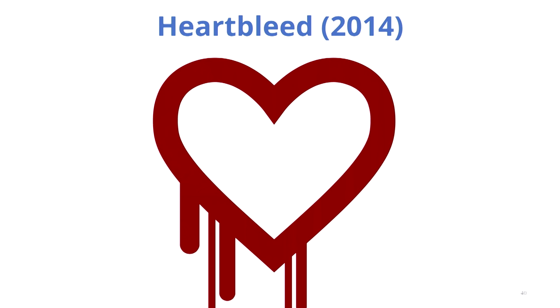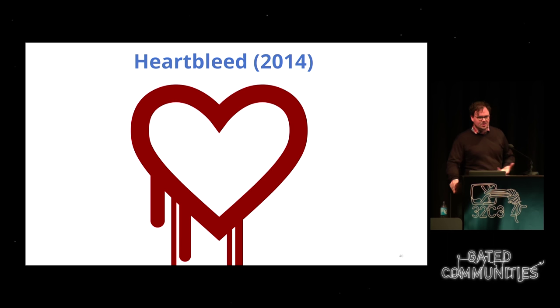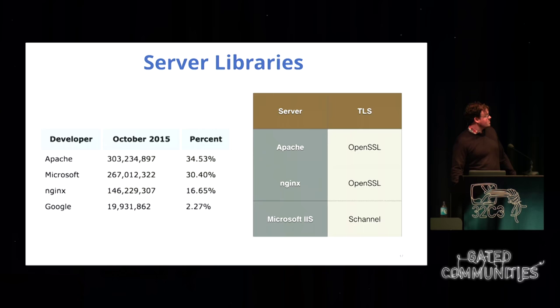Heartbleed was a big deal. It turns out this is just another dumb bug in C — it's just an over-read that ends up disclosing information on the server. This one was really bad because there's another architecture problem in TLS servers: your private key is kept in the same memory space as everything else. That's kind of absurd from a defense-in-depth perspective — the most exposed system you have, the web server, has in its memory space the private key. Heartbleed helped reveal this, and it affected almost everything since it was in OpenSSL for several versions.